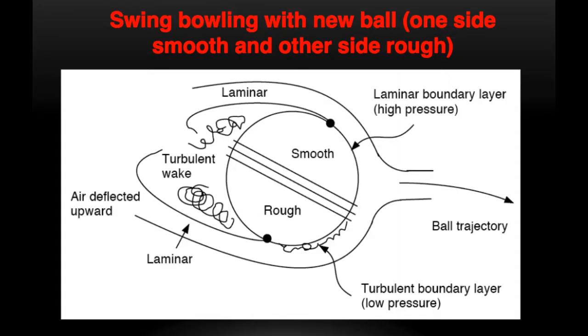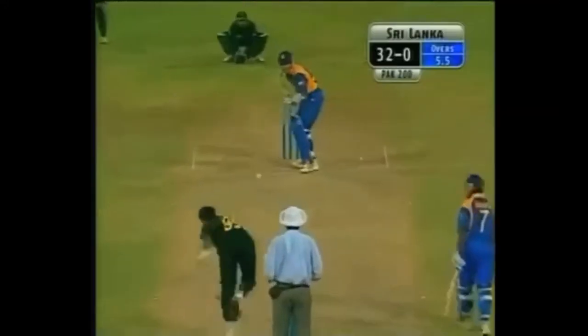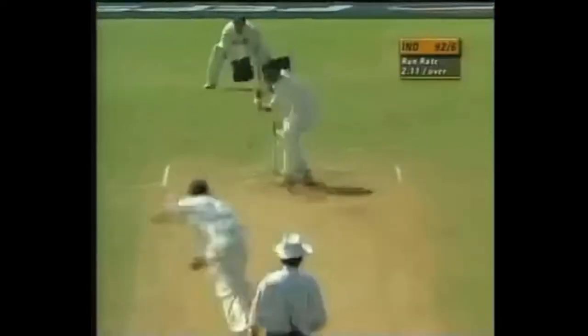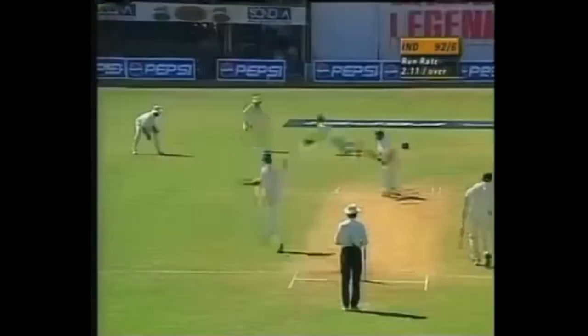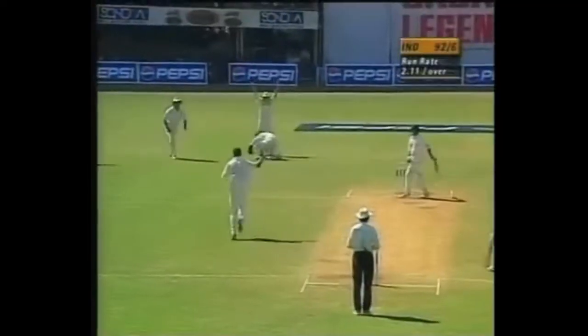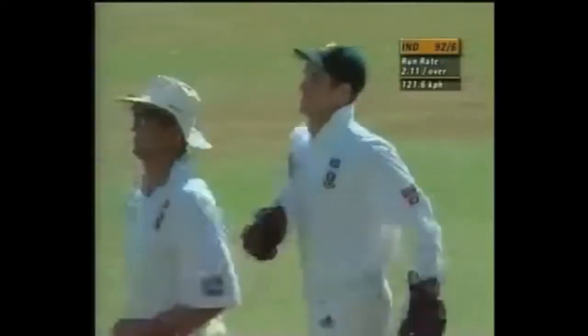On the other hand, reverse swing requires very high speeds and the ball to be rough on one of its sides. Unlike conventional swing, reverse swing will swing in the direction the seam is not pointing.